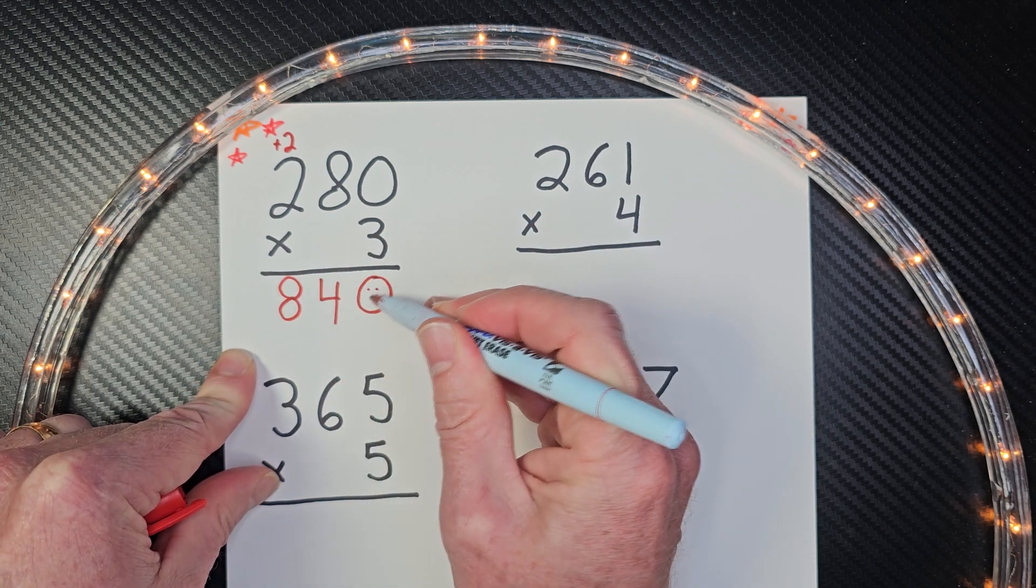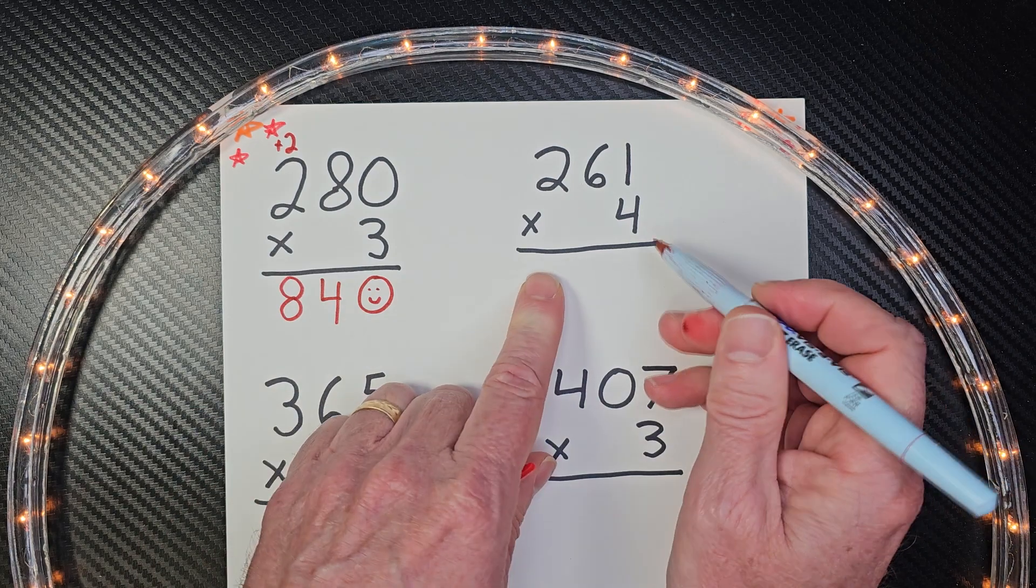So now I go ahead and take three times two is six plus the two is eight. All right, you can put a little smiley face in there if you want to. All right, let's go ahead and do the next one here.